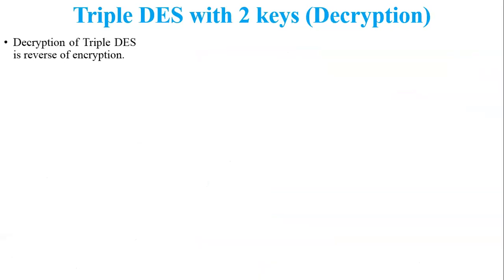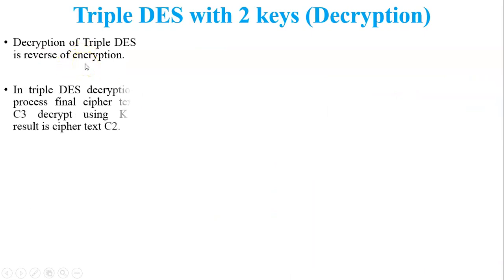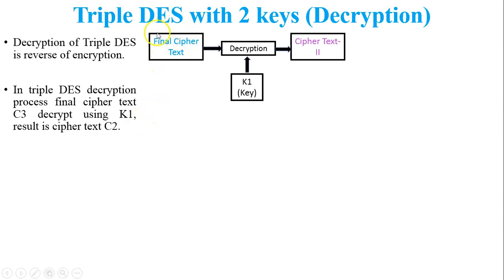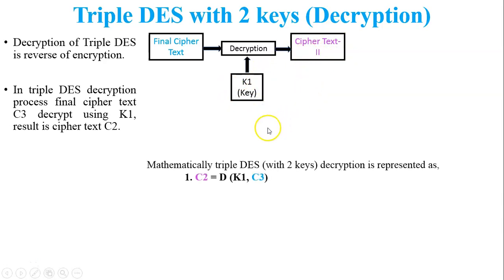Now the decryption of Triple DES with two keys, which is totally the reverse of encryption. The receiver receives the final ciphertext C3. First, C3 is decrypted using K1 to get ciphertext C2. In the figure, the first decryption process has inputs C3 and K1, generating C2. Mathematically: C2 = D(K1, C3).